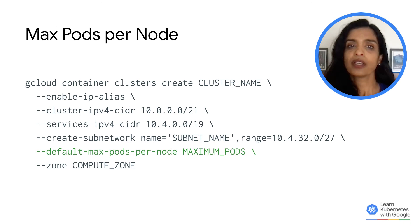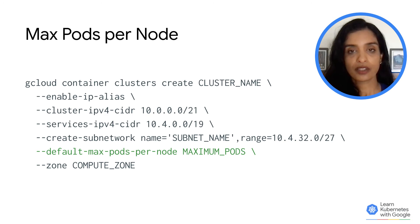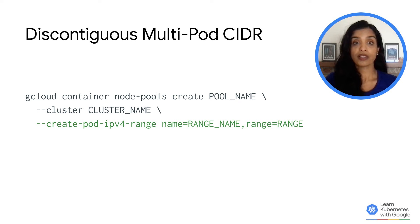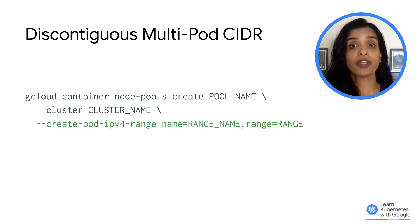In this example, we can use GKE's default max pods per node parameter to fine tune our cluster's pod density per node. Another advanced GKE feature that helps alleviate large contiguous blocks is adding a new range for pods via a new node pool. This is otherwise known as adding a discontiguous multipod CIDR block.